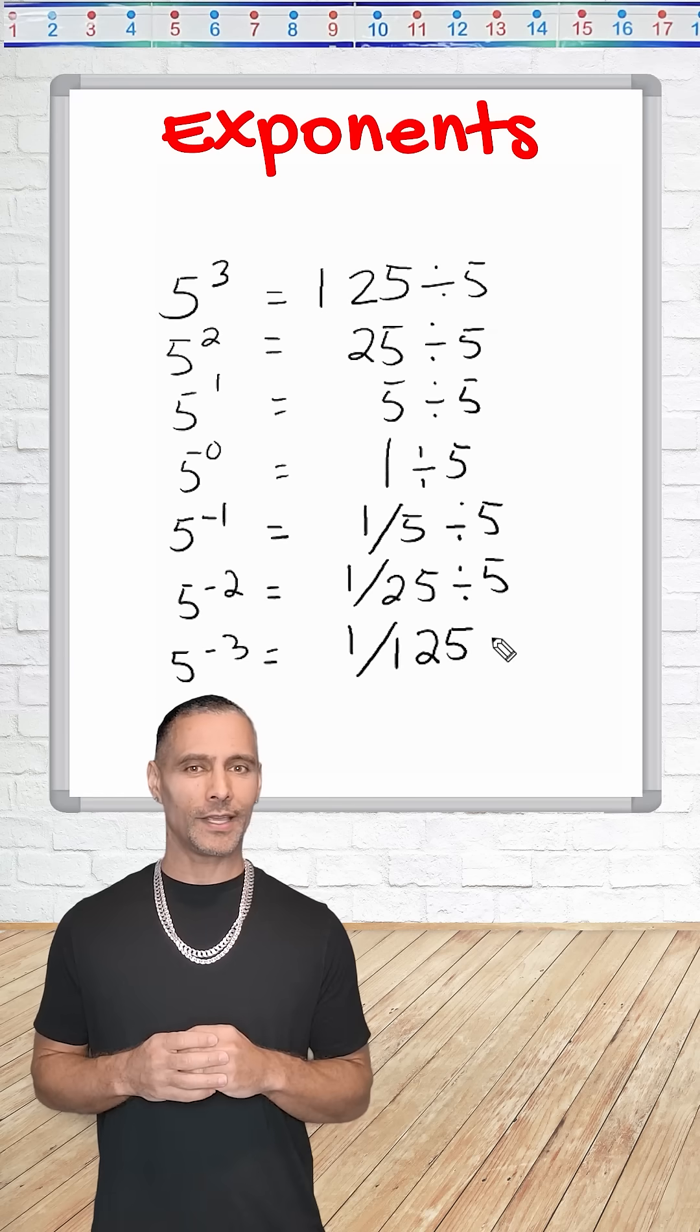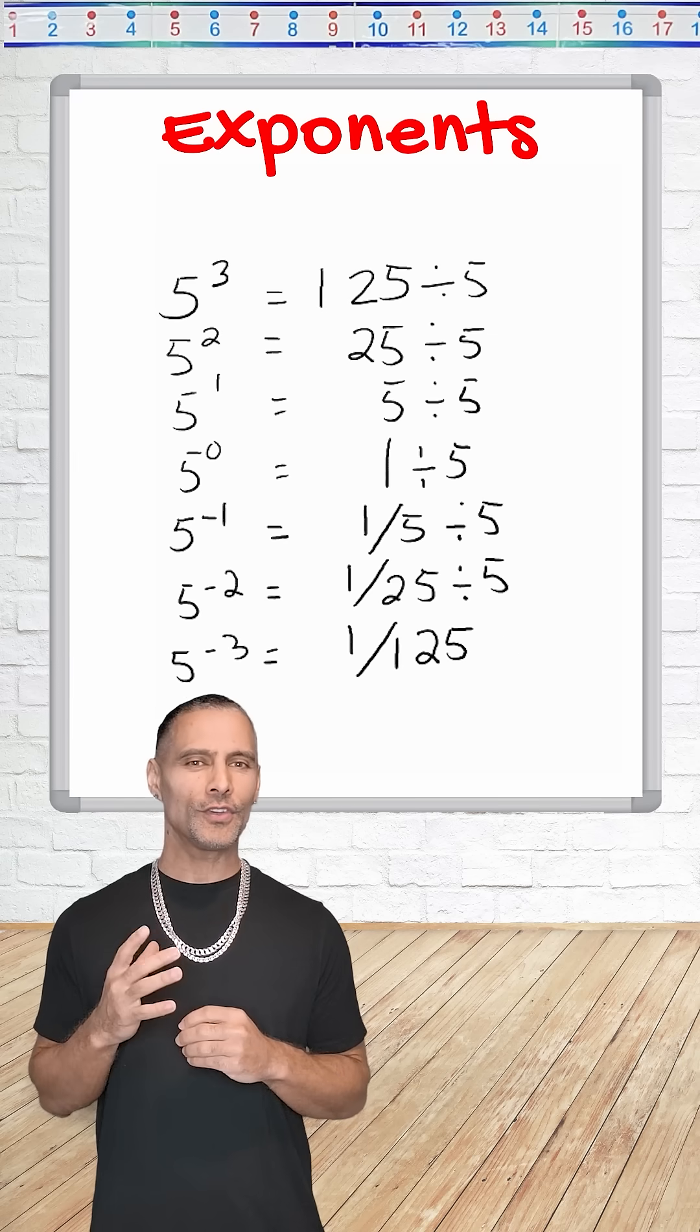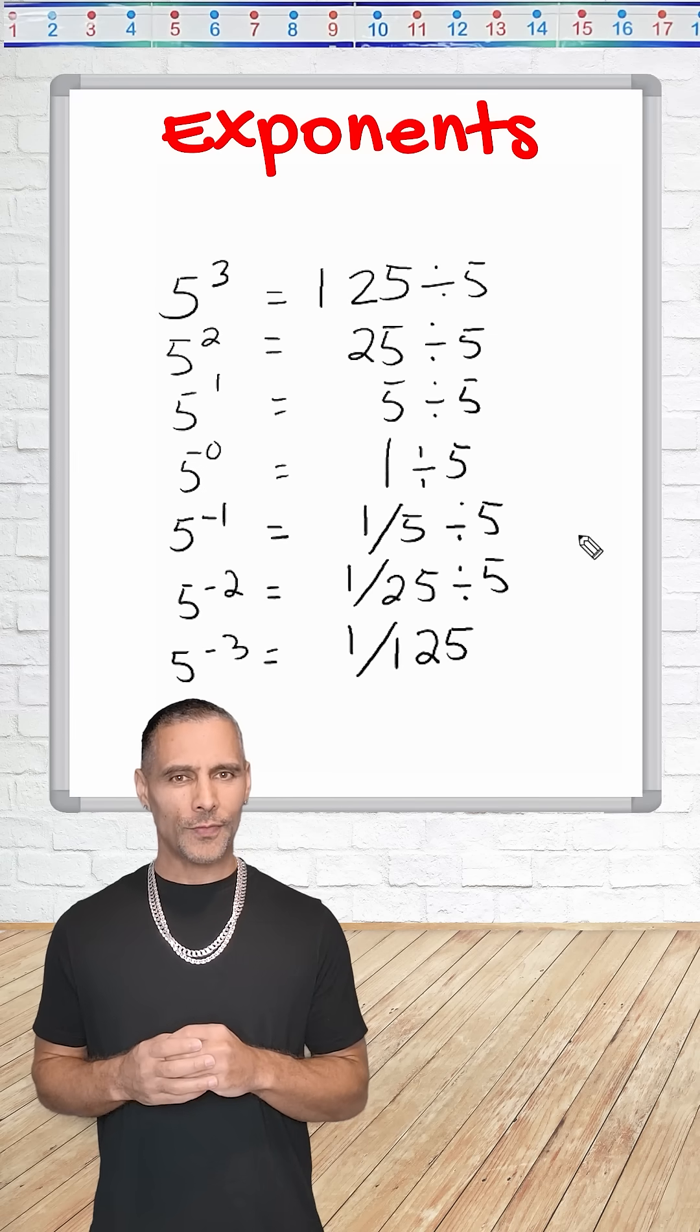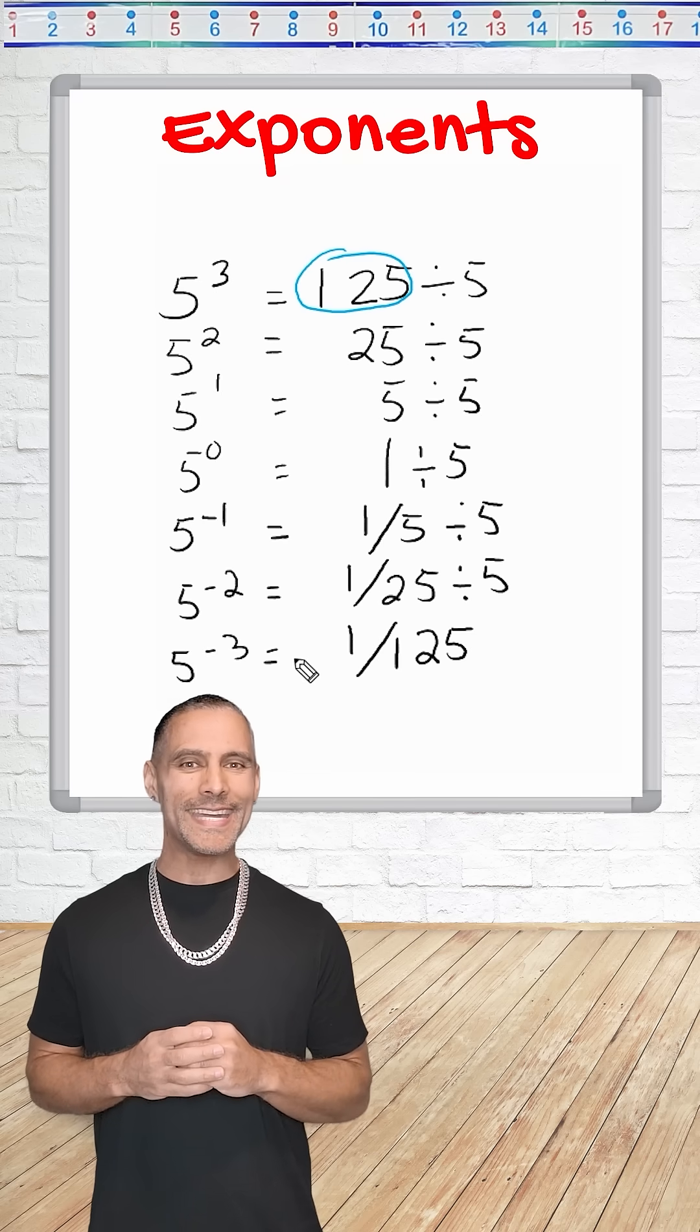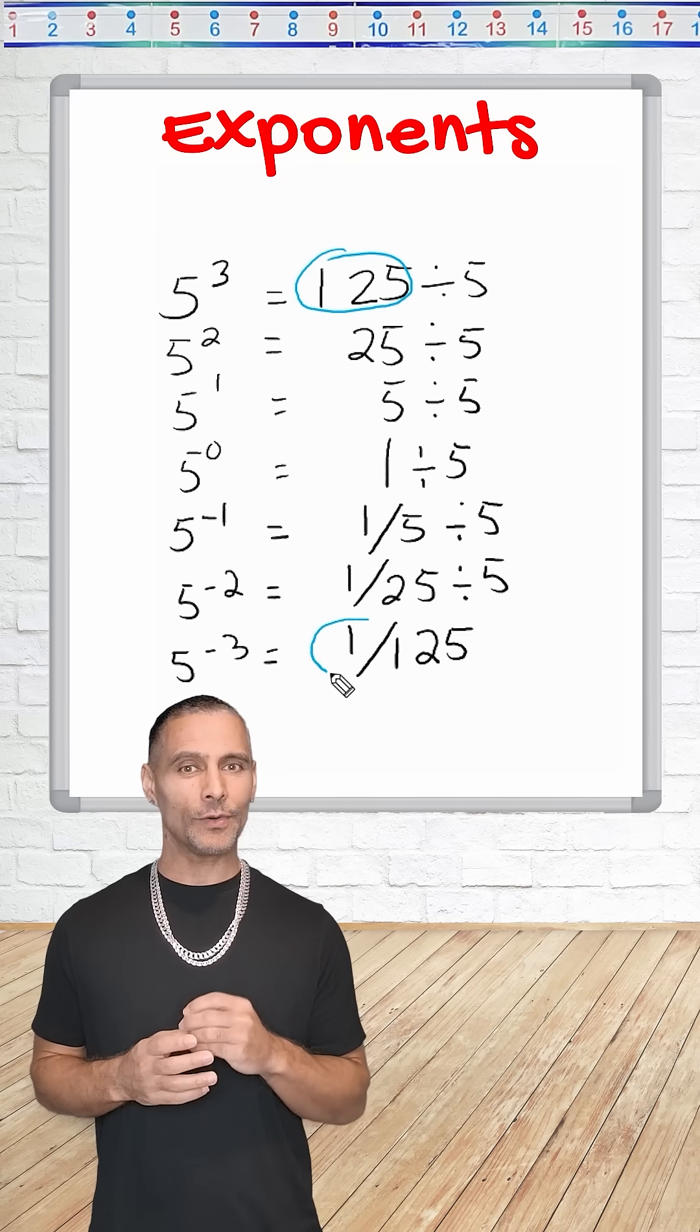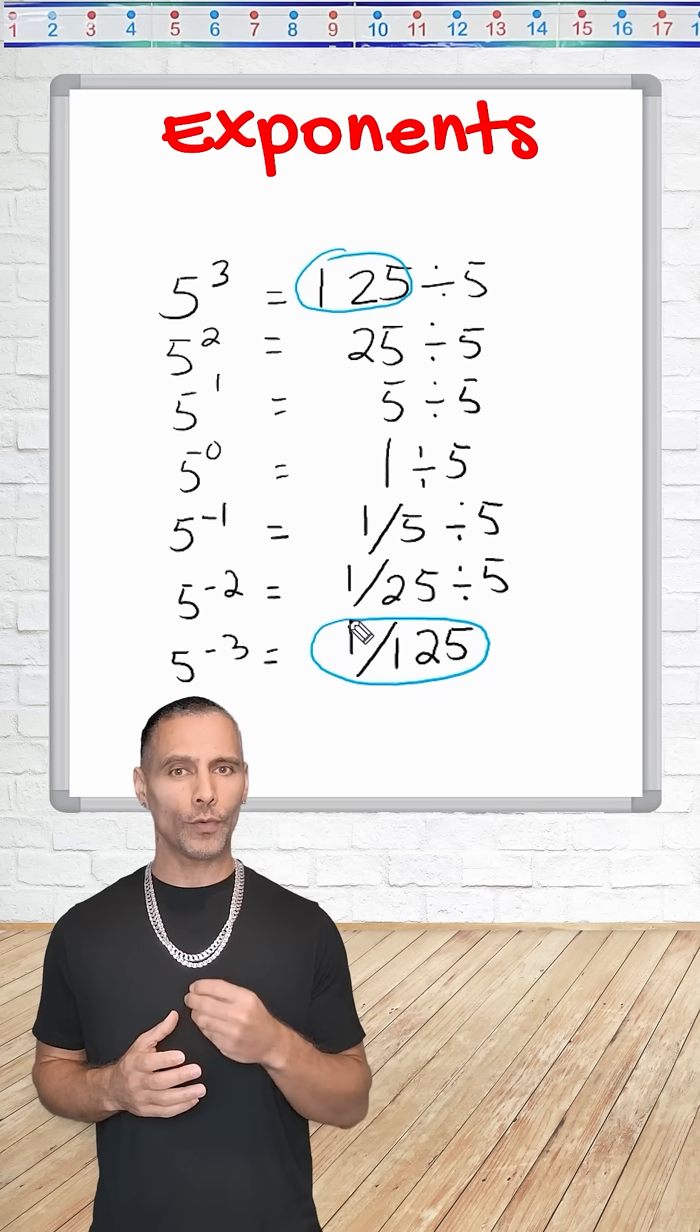Now, instead of dividing over and over again, here is a shortcut. If you know that 5 to the third power is 125, then 5 to the negative third power is simply the reciprocal, which is equal to 1 over 125.